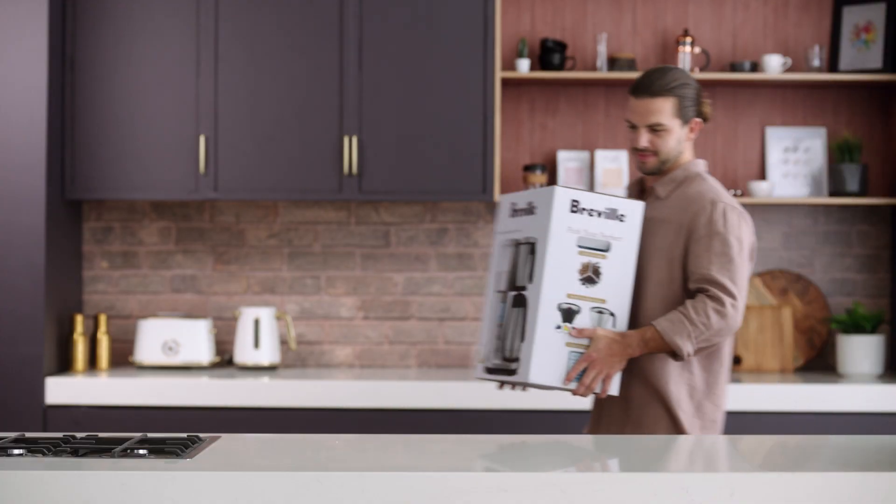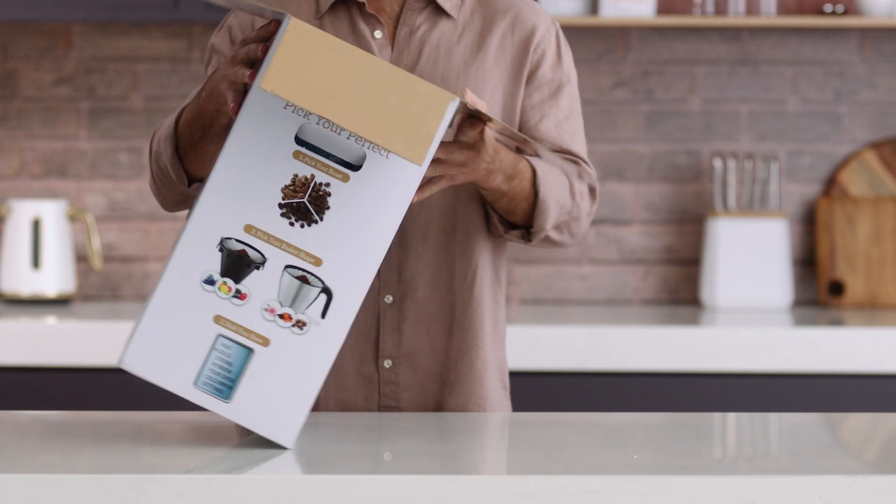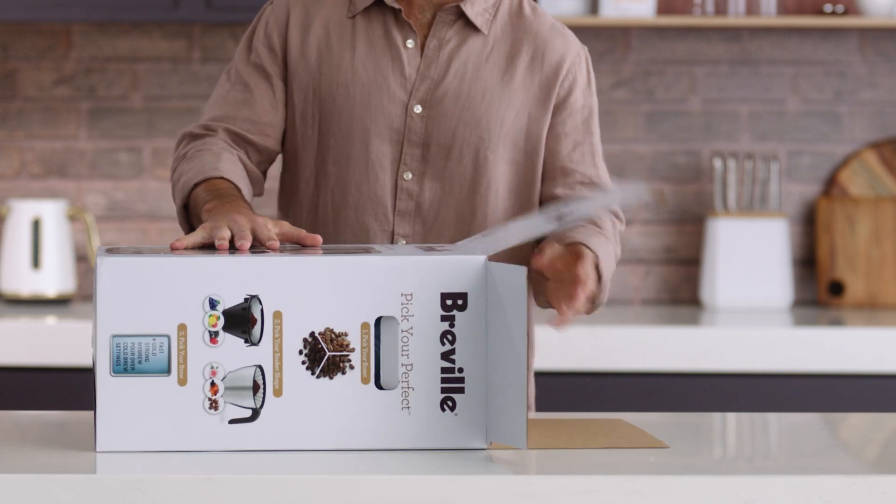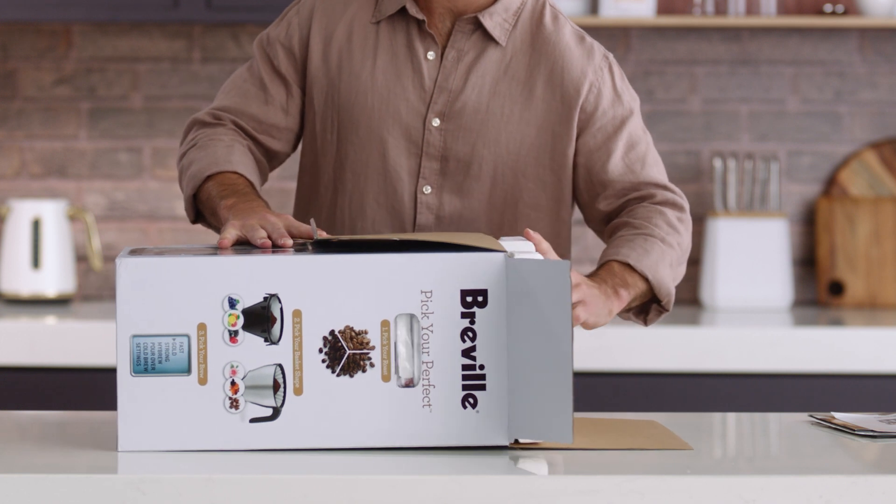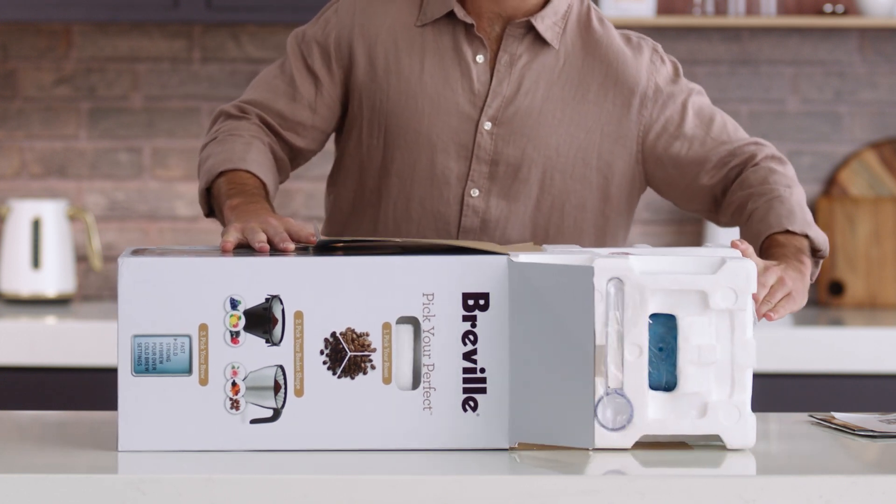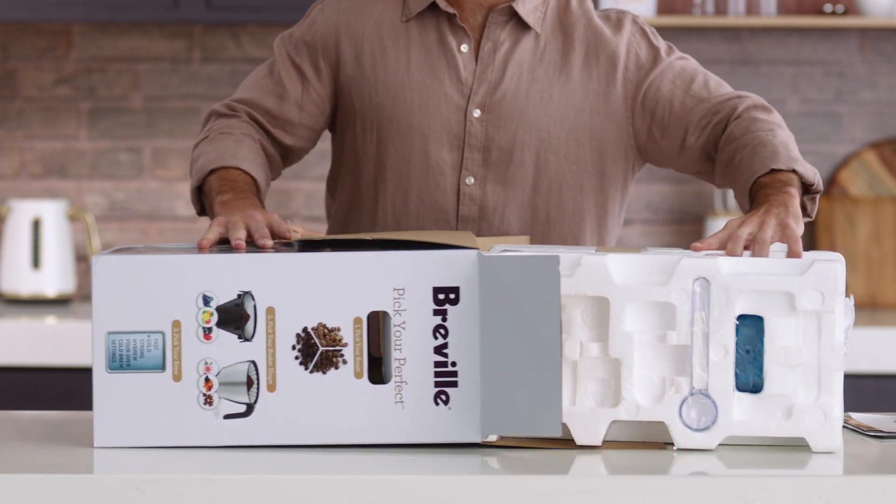But first let's show you how to get your machine up and running. Lay the box on its side and use the flap to slide the machine out, which may require a bit of effort as it's a tight fit. Make sure the side handles are folded upwards so they don't get stuck.